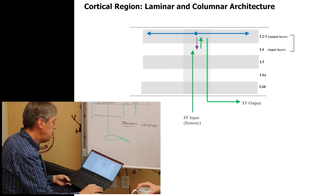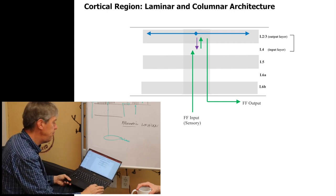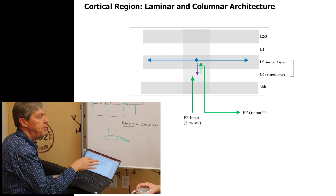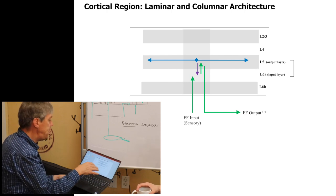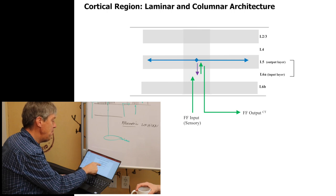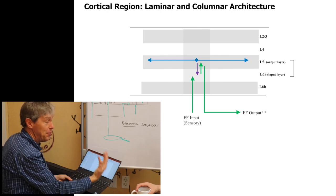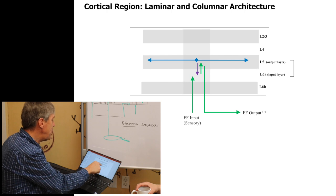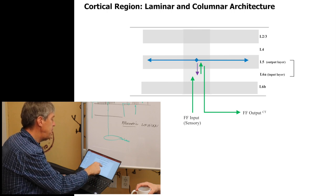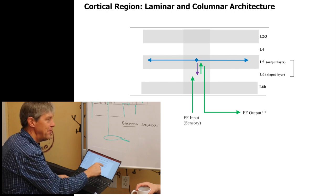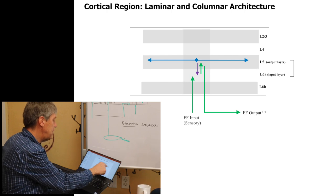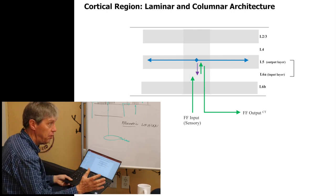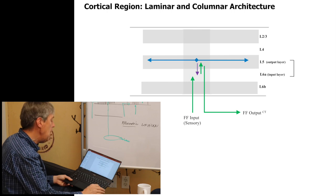Now things get a little bit more complicated. The same motif appears twice in every region. The same input that goes to layer four also goes to layer six A. It forms the same types of representations — spatial, polarity, many columns, all that. That projects to layer five, and layer five is an output layer. Layer five projects long distances and projects back. So this two-layer circuit we've come up with appears twice.